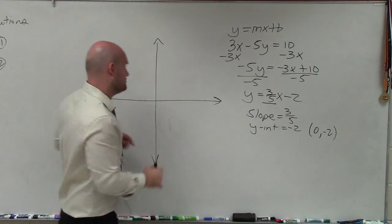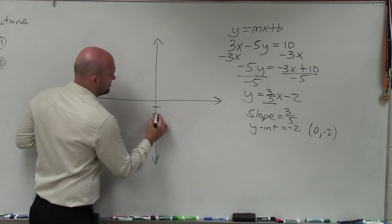So what I'll do is I'll first plot the y-intercept, which is at 0, negative 2, and make a nice big point.